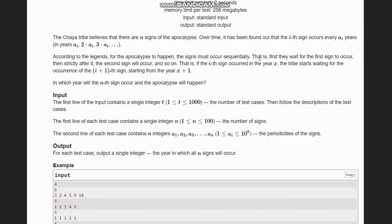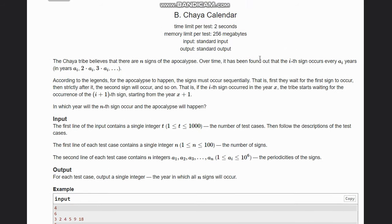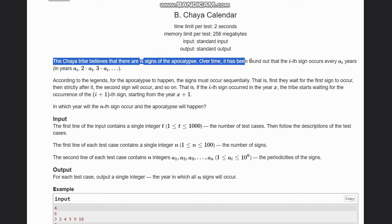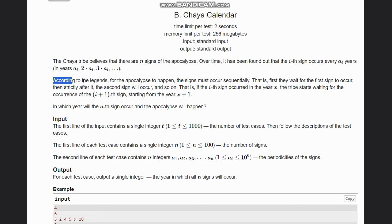Hello everyone, welcome to the channel. So here we are discussing the question Shaya Calendar. The question states that the Shaya tribe believes that there are n signs of the apocalypse. Over time it has been found that the i-th sign occurs every a_i years, in years a_i, 2*a_i, 3*a_i and so on.